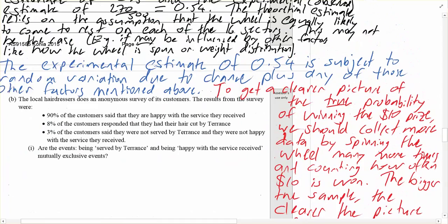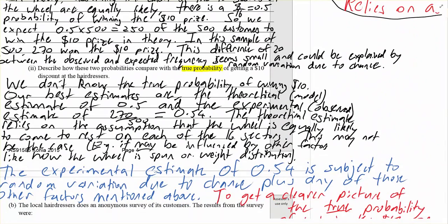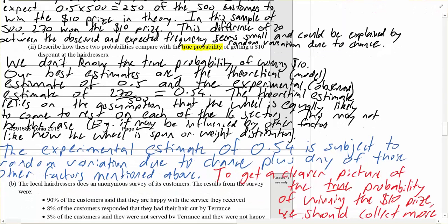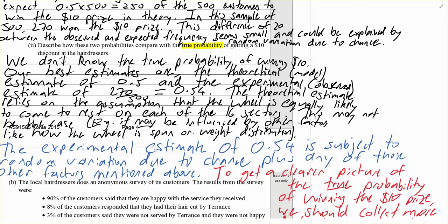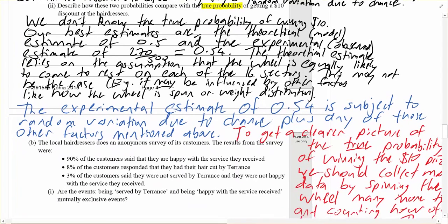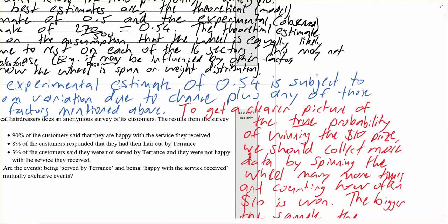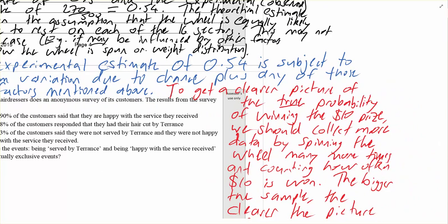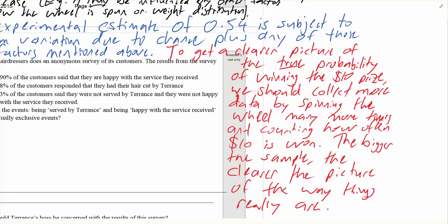So from the top: we don't know the true probability of winning $10. Our best estimates are the theoretical model estimate of 0.5 and the experimental observed estimate of 0.54. The theoretical estimate relies on the assumption that the wheel is equally likely to come to rest on each of the 16 sectors — this may not be the case; for example, it may be influenced by factors like how the wheel is spun or weight distribution. The experimental estimate of 0.54 is subject to random variation due to chance, plus any of those other factors. To get a clearer picture of the true probability of winning the $10 prize, we should collect more data by spinning the wheel many more times and counting how often $10 is won, because the bigger the sample, the clearer the picture of the way things really are.